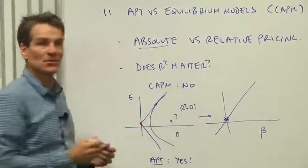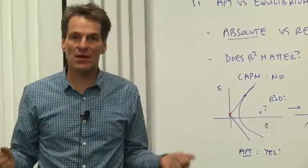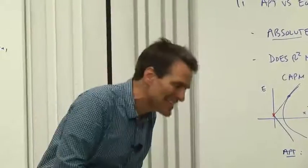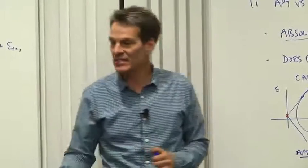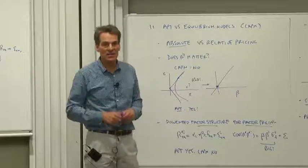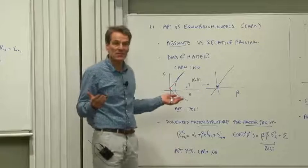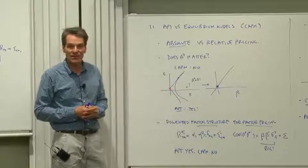If you have the consumption-based model, you should, in principle, be able to price absolutely any asset whatsoever - stocks, bonds, real estate, the price of water, you name it. Marginal utility consumption growth price it. It's based on deep fundamentals.